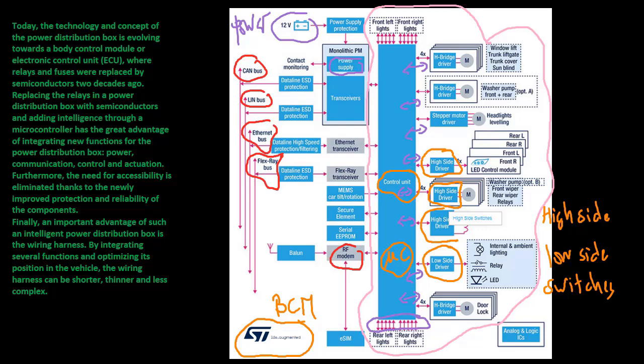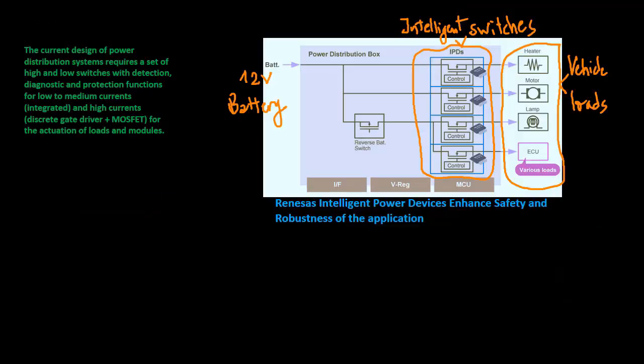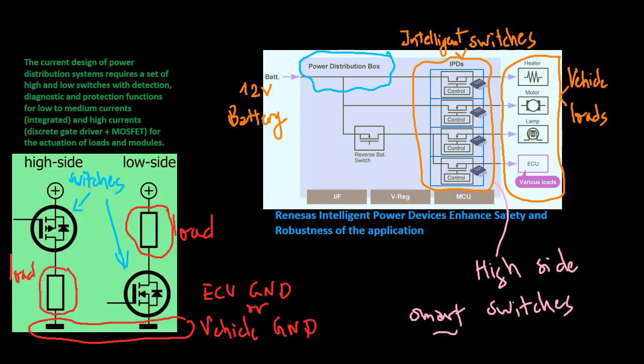Furthermore, the need for accessibility is eliminated thanks to the newly improved protection and reliability of the components. Finally, an important advantage of such an intelligent power distribution box is the wiring harness. By integrating several functions and optimizing its position in the vehicle, the wiring harness can be shorter, thinner, and less complex.